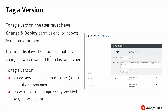Lifetime displays the modules that have changed, who changed them last, and when they were changed. Looking at our OSMDB application, we can see that it has two modules: the OSMDB and the OSMDB Core. We can see which ones have been changed, and when we go to tag it, we have to give it a new version number and can optionally give it a description — think of these as release notes before pressing the finalized tag version button.